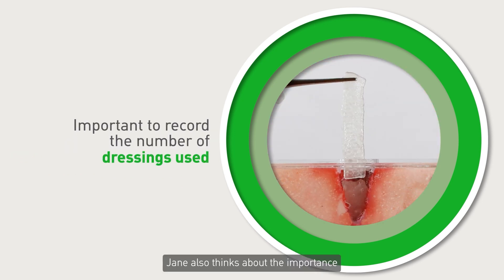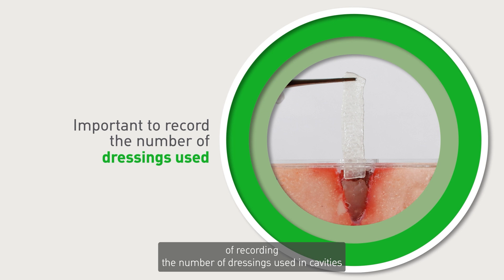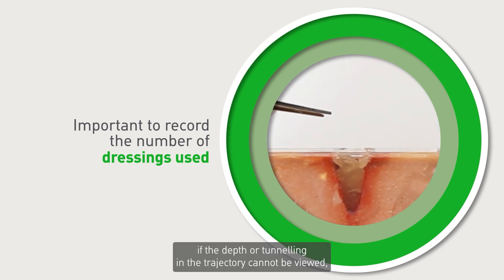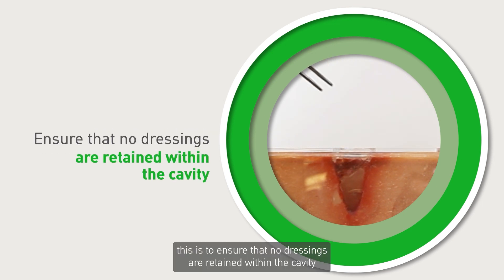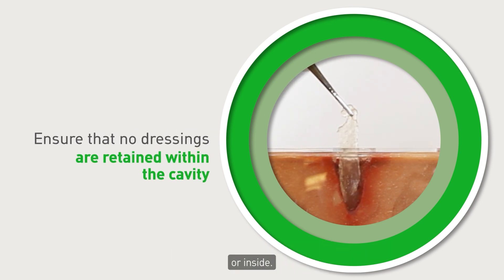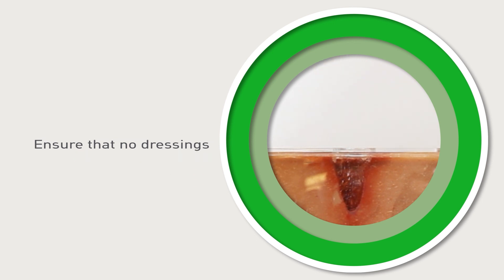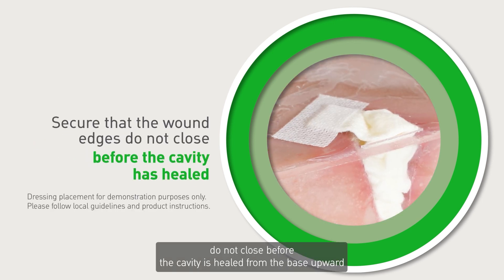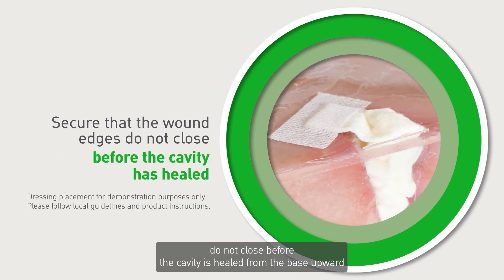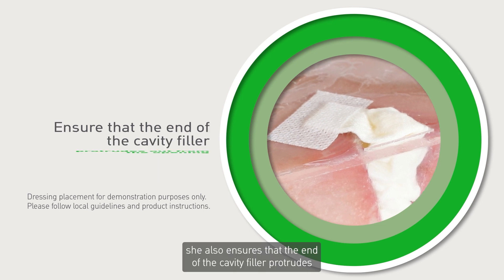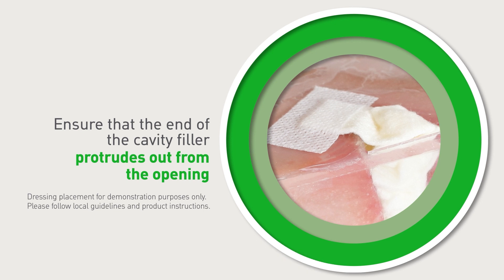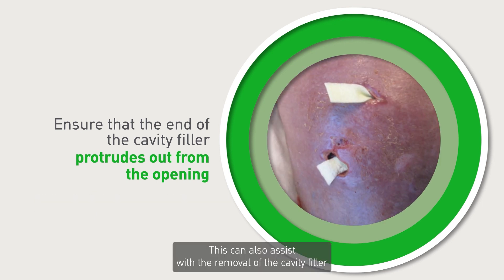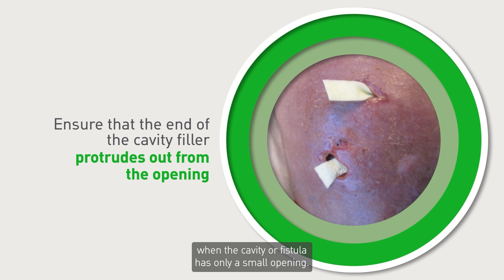Jane also thinks about the importance of recording the number of dressings used in cavities if the depth or tunneling trajectory cannot be viewed. This is to ensure that no dressings are retained within the cavity. To secure that the wound edges do not close before the cavity is healed from the base upward, she also ensures that the end of the cavity filler protrudes out from the opening and is secured on the peri-wound. This can also assist with the removal of the cavity filler when the cavity or fistula has only a small opening.